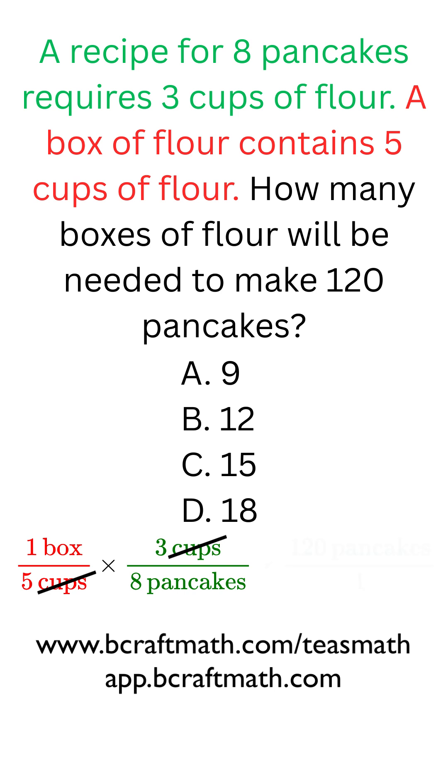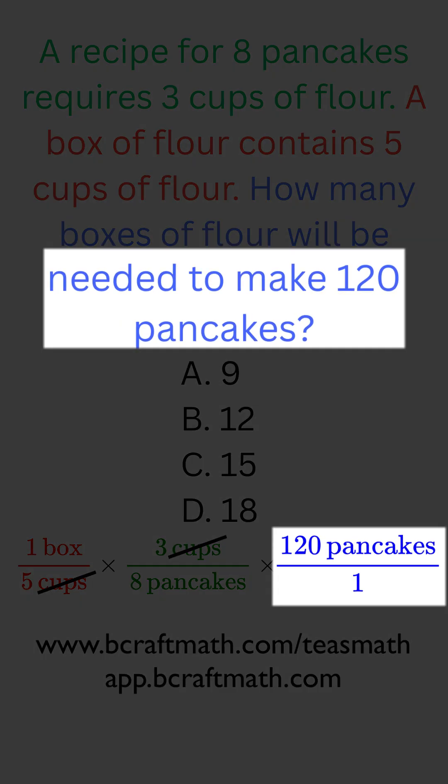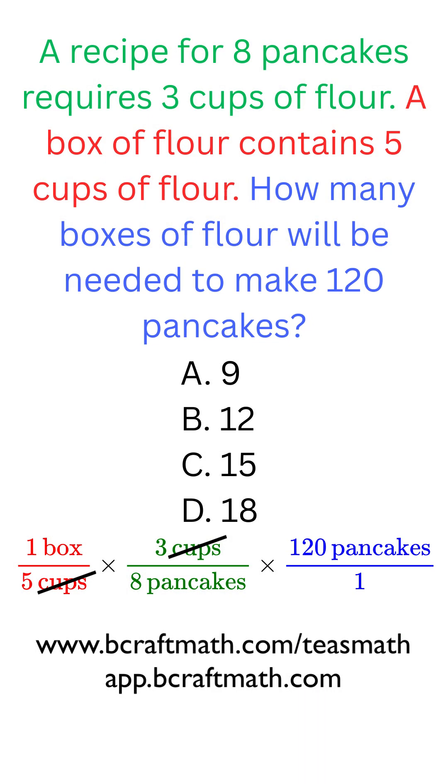So notice we have something else talking about pancakes in our problem. We need to make 120 pancakes. We're going to put this over one where one is a placeholder but it really means the one big old order of pancakes that you're going to make. And now we've gotten rid of pancakes.